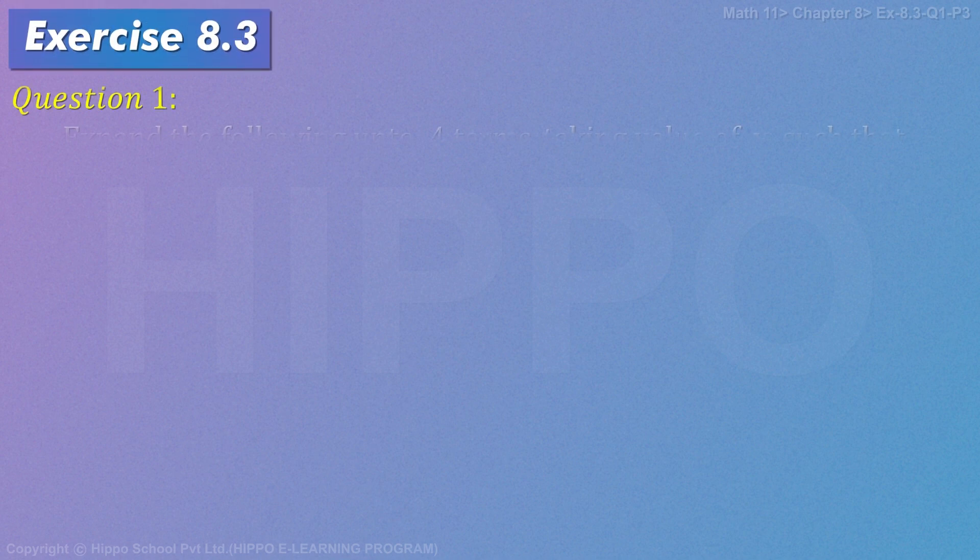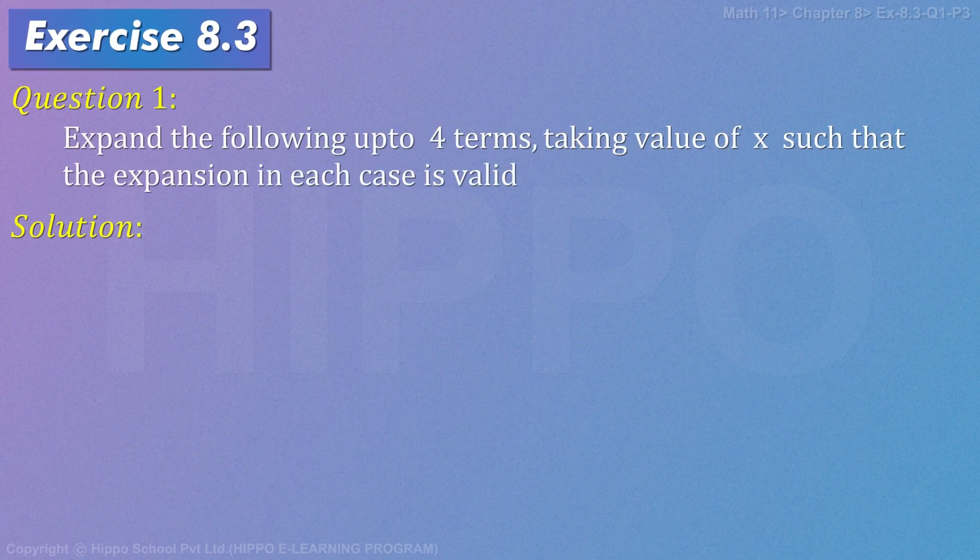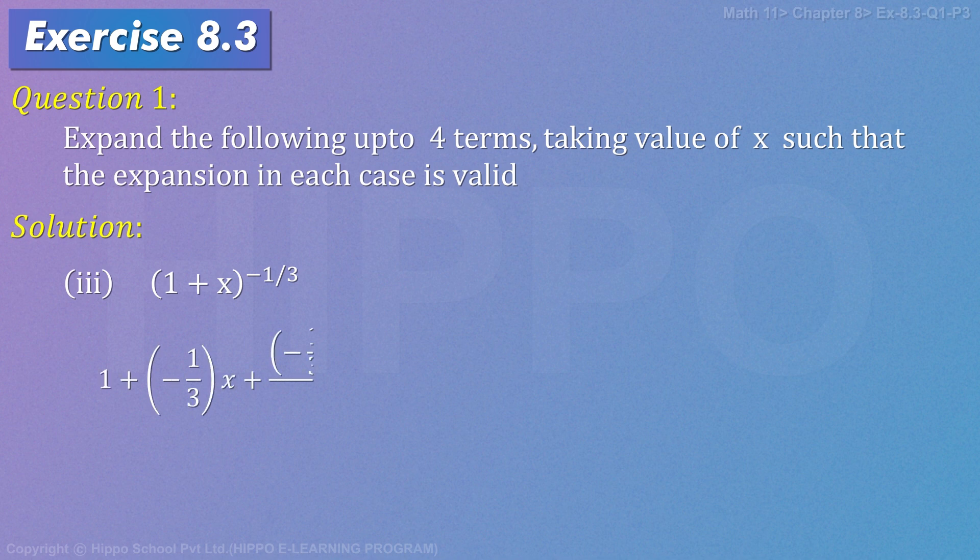Exercise number 8.3, question number 1: (1+x) raised to power minus 1 by 3. So, 1 plus ab n likhenge n jo ki yahan pe kya hai minus 1 by 3 saath x plus n n minus 1 means minus 1 by 3 minus 1 by 3 minus 1 by 2 factorial saath x ka square plus